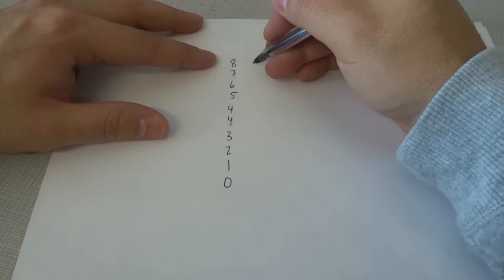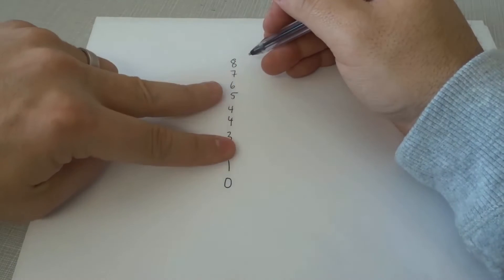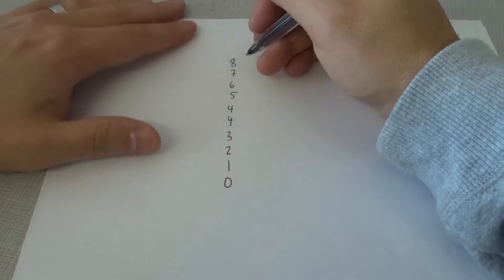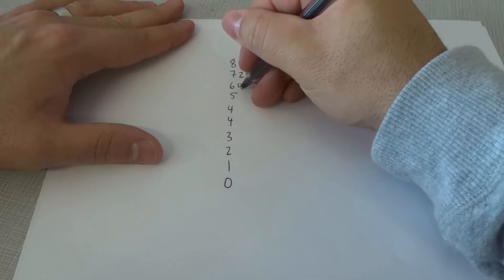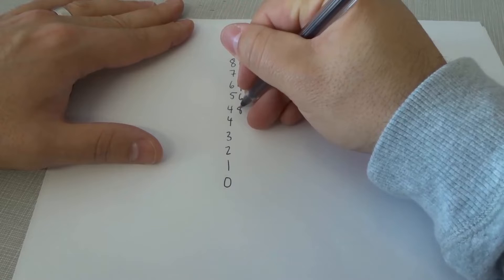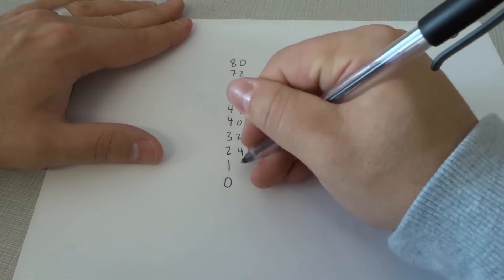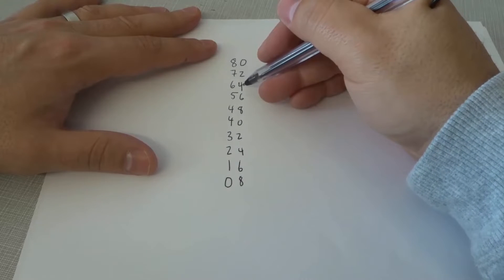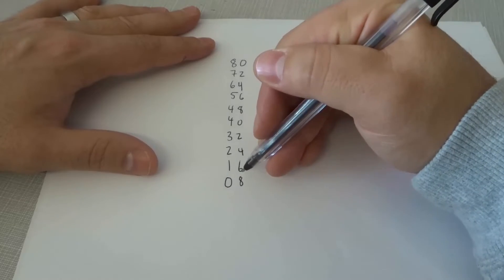Now to the right of those numbers, we're actually going to be counting upwards by 2, so we're going to skip count by 2's starting from 0 up to 8. So we're going to start from 0, then 2, 4, 6, 8, and then back at 0 again: 0, 2, 4, 6, 8.